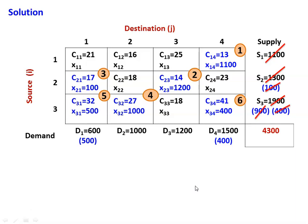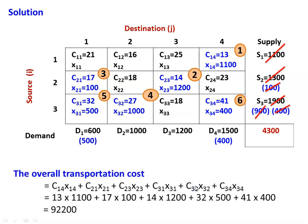There are 6 allocations in total and all supply capacities are exhausted, all demands satisfied. The total transportation cost is: C14·X14 + C21·X21 + C23·X23 + C31·X31 + C32·X32 + C34·X34. Substituting: 13×1100 + 17×100 + 14×1200 + 32×500 + 41×400 = Rs. 92,200. This is the solution using the Least Cost method.